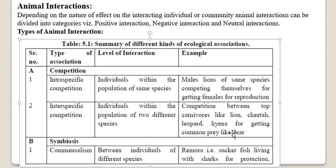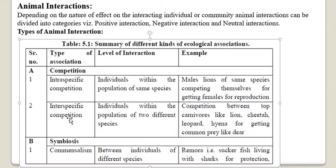Lion, leopard, cheetah, and hyena all depend on deer for food — they all look at deer as prey. So the interspecific competition exists between lion and cheetah, lion and leopard, leopard and hyena, or cheetah and hyena for getting the deer. Competition can thus be of two types: intraspecific and interspecific.